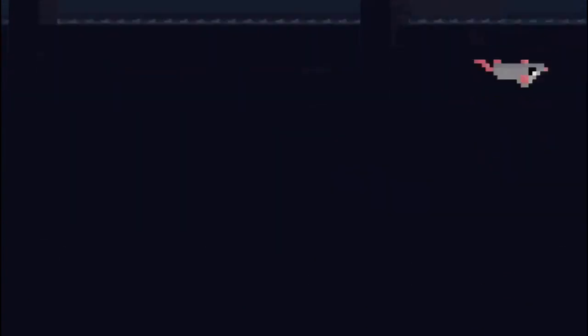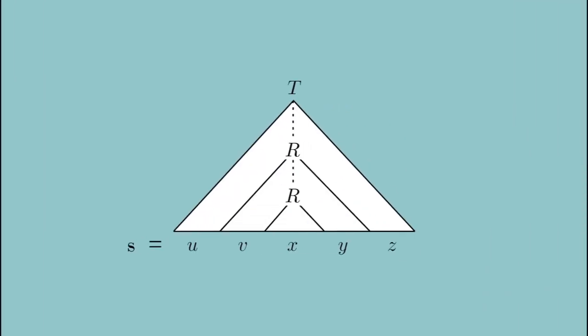We know, for example, that our favorite context-free language 0^n 1^n can be pumped in this way. Supposing the pumping length to be 2, then all strings of length at least 2 can be pumped indefinitely. Here we can choose V to be 0 and Y to be 1, and the other three substrings to be empty. No matter how many times V and Y are pumped, the resulting strings will be in the language.